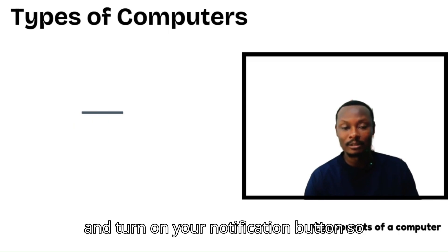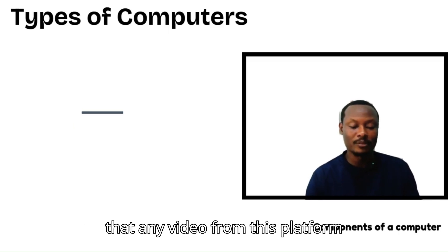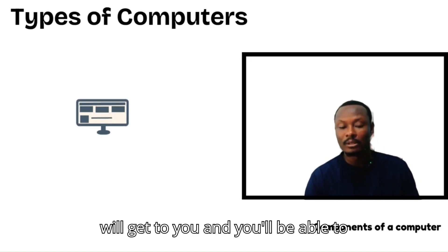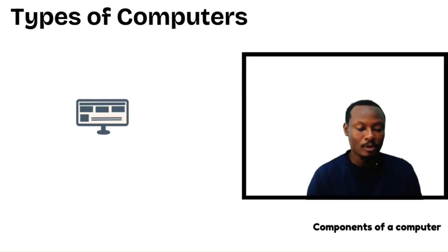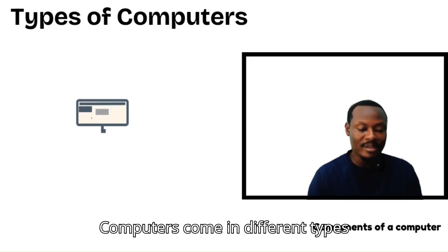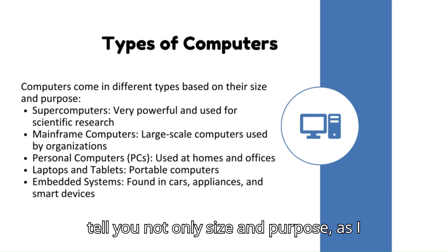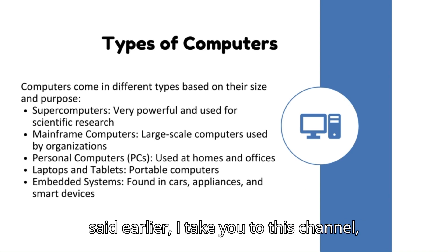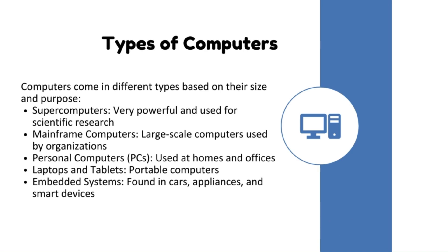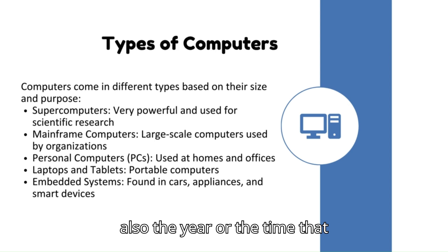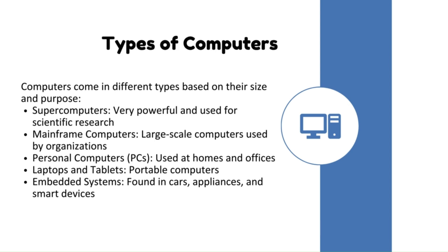Try to subscribe to this channel and turn on your notification button so any video from this platform reaches you. Computers come in different types based on their size and purpose — and not only size and purpose, but also the year or time that a particular device was manufactured.